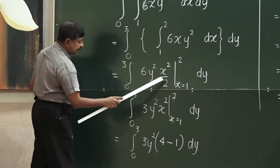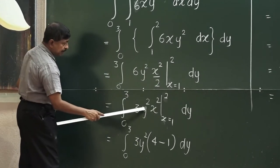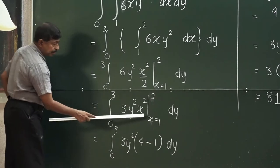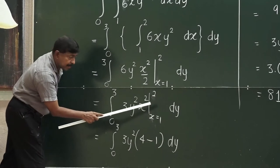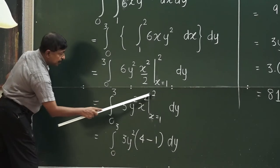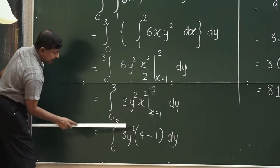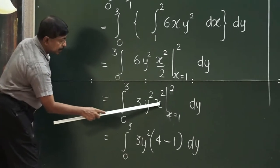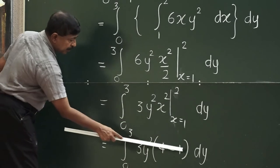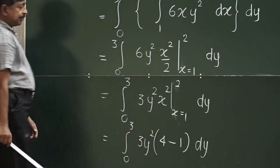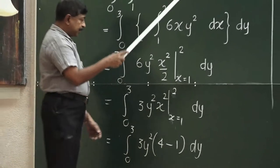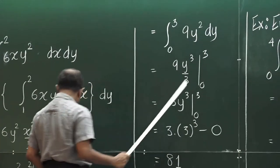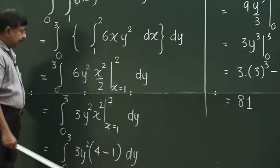Now you can simplify this a little bit. You get 3y²x². Now plug in the limits, but the limits are for x. First plug in 2 — 3y² can be pulled out. When you plug in 2 you get 4, and when you plug in 1 you get 1. So 4 minus 1 equals 3, giving 9y².